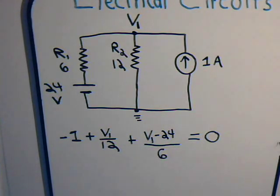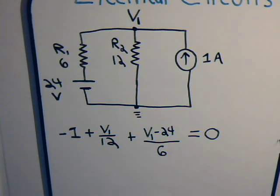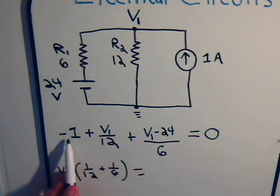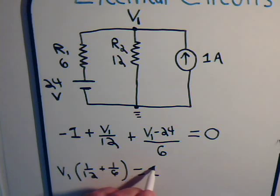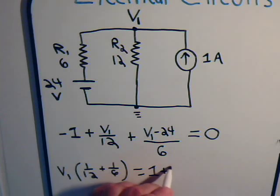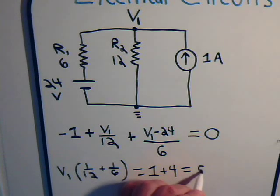So, here for this circuit, we just have a single node to deal with, and let's see what this comes out to. Here we have V1 over 12, and here we have V1 over 6, and then this we can take to the right side of the equation, that becomes plus. Here we have 24 divided by 6, that's minus 4, take it over to this side.